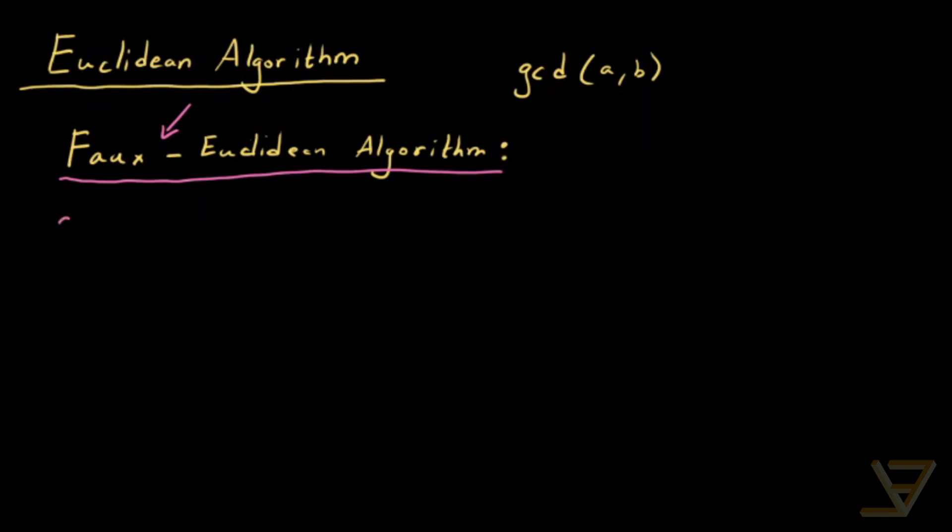So what it says is that if a and b are in the integers and a squared plus b squared is not zero, which just means that at least one of them is non-zero, and k is in the integers, then gcd of a,b is equal to the gcd of a plus kb and b.